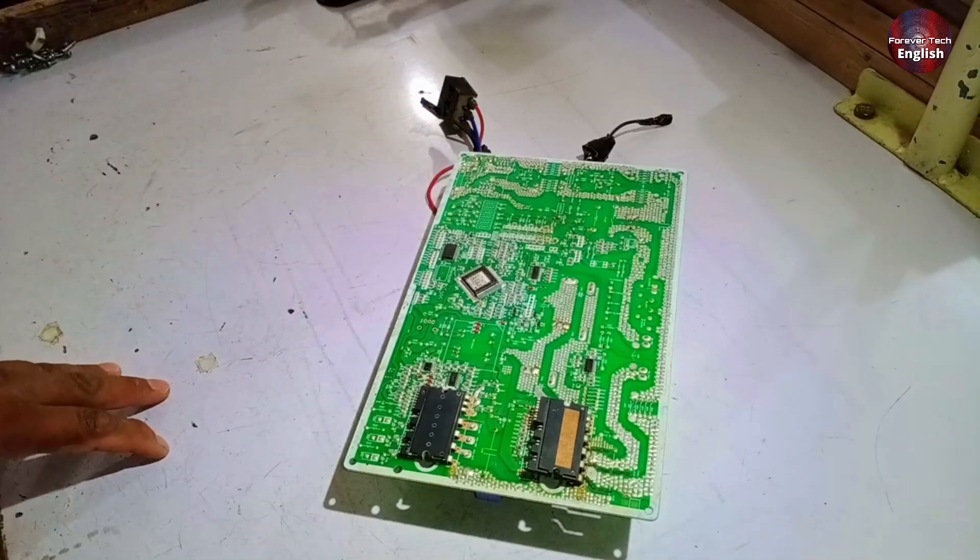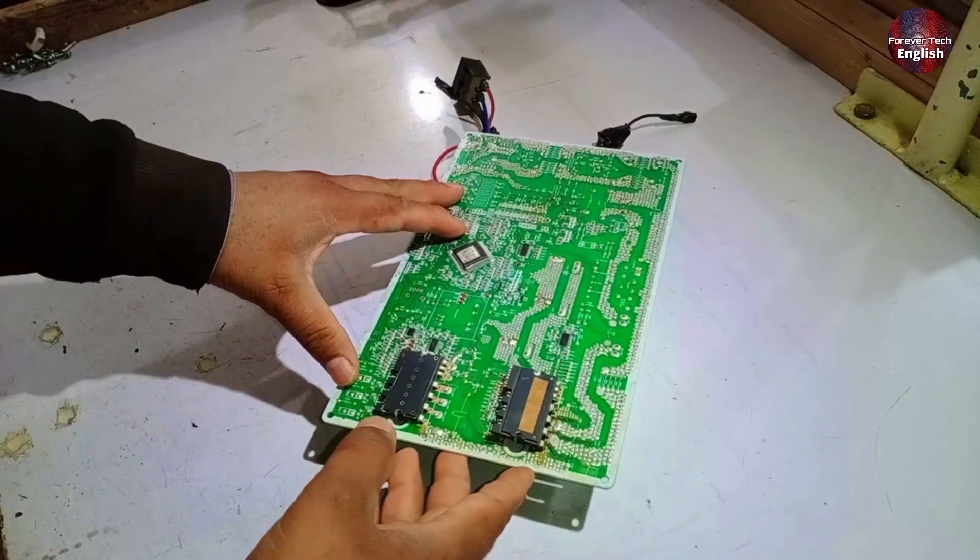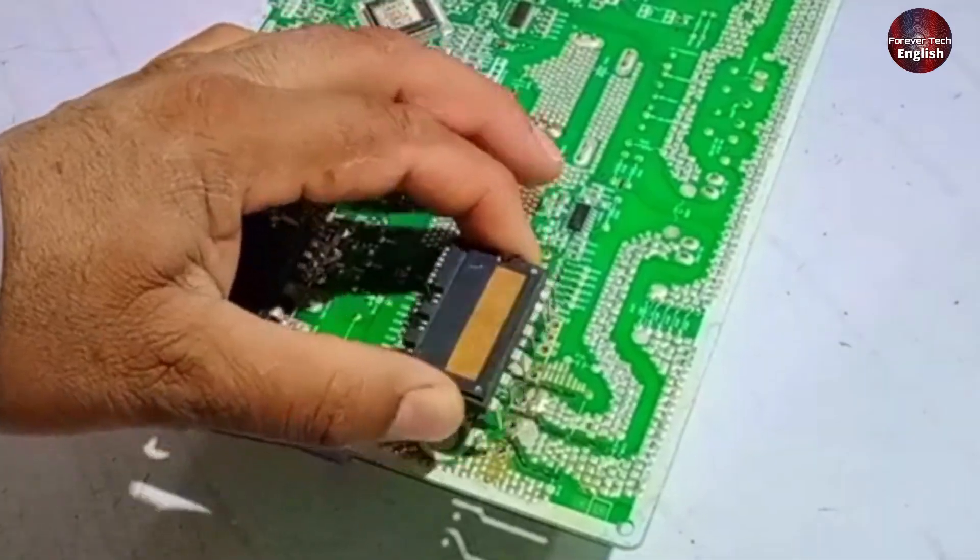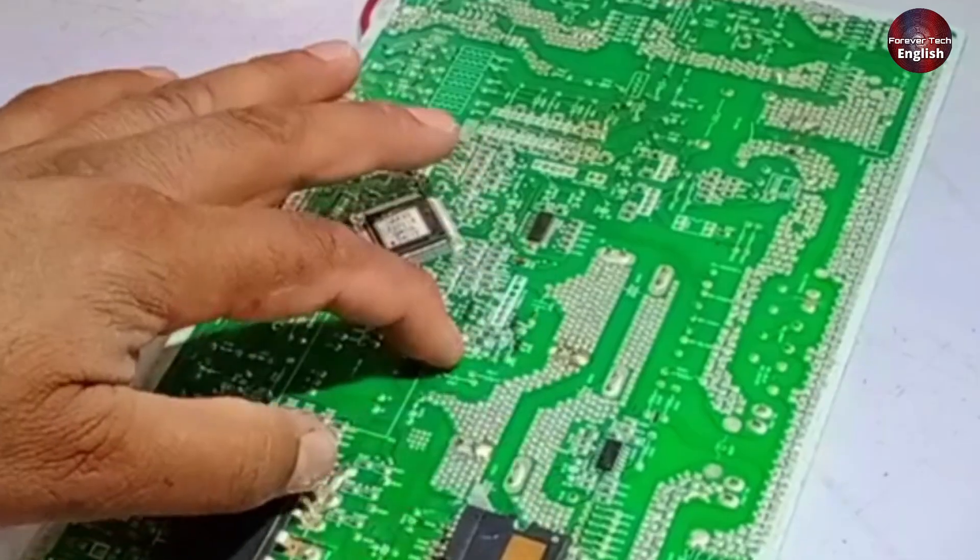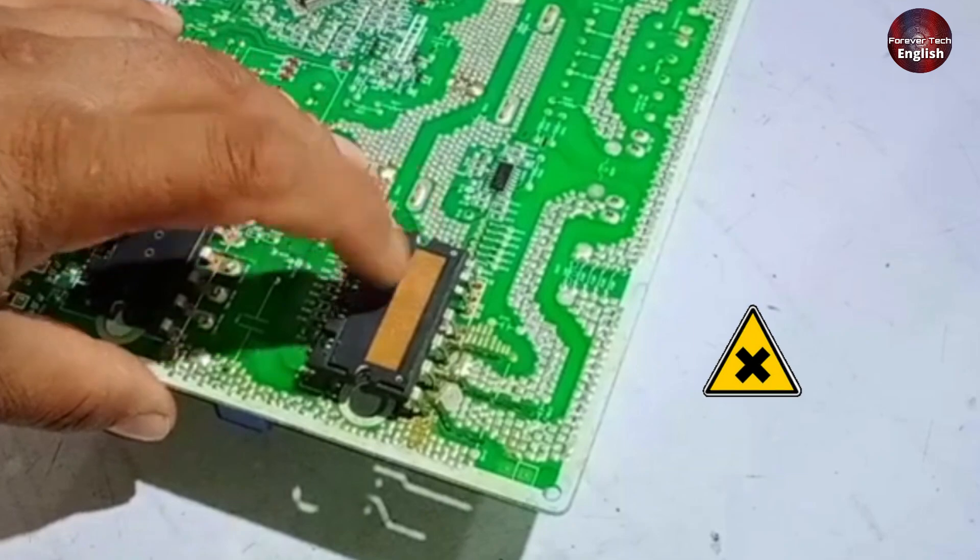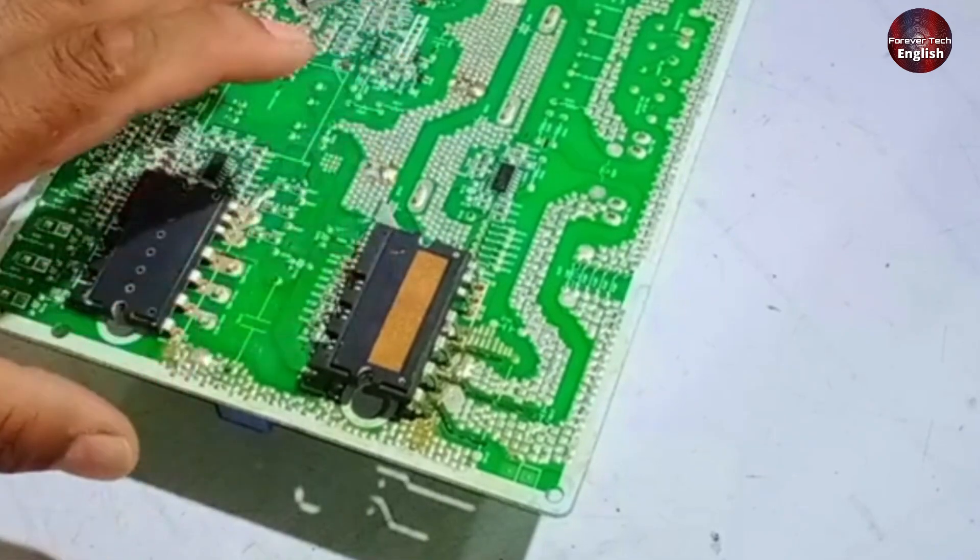So first, we'll look at where the voltages come in so that it's easier to understand. Additionally, this part has become faulty, so we cannot supply power to it. The PCB isn't turning on because one of its points is damaged, and due to that, it's not working.